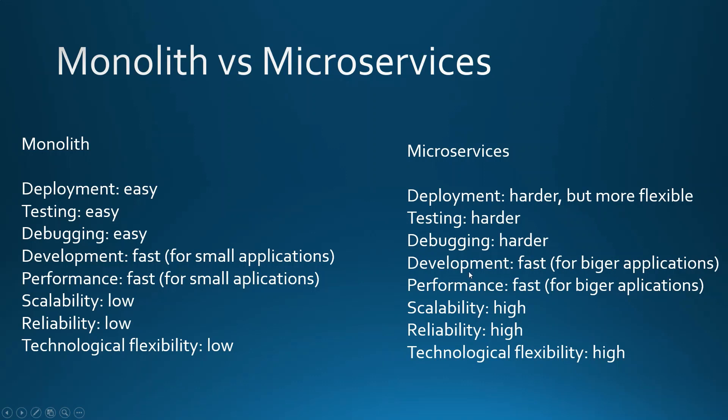Development in monolithic architecture is fast but only for small applications. For microservices it's also fast but for bigger applications, because microservices require you to write a lot more code. For smaller applications this means there is a code overhead — you are writing much more code than is actually needed.